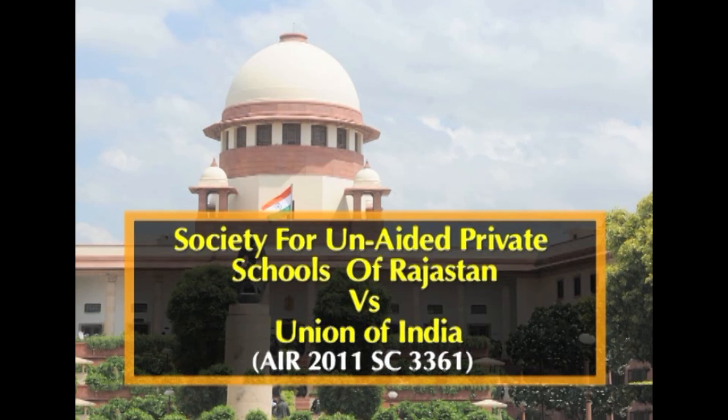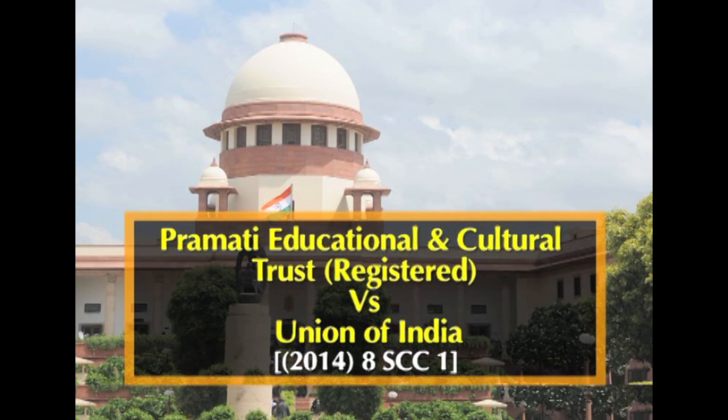In Society for Unaided Private Schools of Rajasthan versus Union of India, decided in 2011, the Supreme Court upheld the constitutionality of Section 12 of the Rights of Children to Free and Compulsory Education Act, which requires all schools, both state funded and private, to accept 25% intake of children from disadvantaged groups. However, the court held that the RTE Act could not require unaided minority schools to satisfy a 25% quota, as this would constitute a violation of the right of minority groups to establish private schools under the Indian constitution. Subsequently, in Pramati Educational Cultural Trust Registered versus Union of India, a five-judge bench further examined these issues.